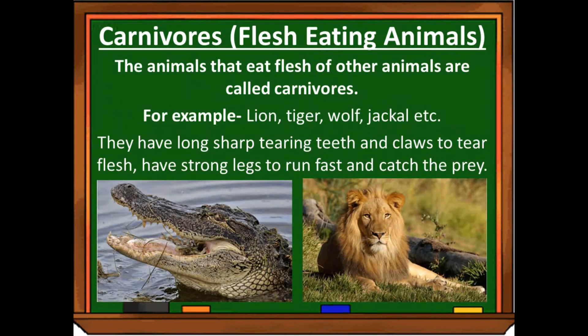Next one is carnivores. Carnivores are flesh-eating animals. The animals that eat the flesh of other animals are called carnivores. For example, lion, tiger, wolf, jackal, etc. They have long, sharp, tearing teeth.